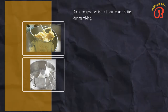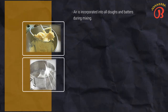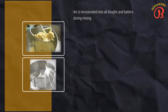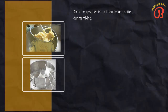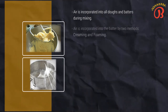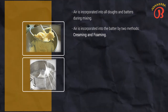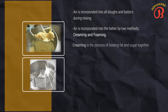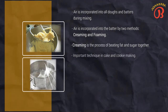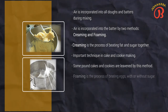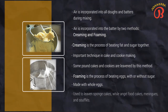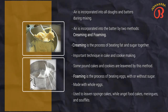Creaming and foaming. Air is incorporated into all doughs and batters during mixing. The formation of air cells is important even in products leavened by yeast or baking powder, because the air cells collect and hold the leavening gases. Some products are leavened mostly or entirely by air. In these products, air is incorporated into the batter primarily by two methods — creaming and foaming. This air expands during baking and leavens the products. Creaming is the process of beating fat and sugar together to incorporate air. Foaming is the process of beating eggs with or without sugar to incorporate air. Foams made with whole eggs are used to leaven sponge cakes, while angel food cakes, meringues, and soufflés are leavened with egg white foams.